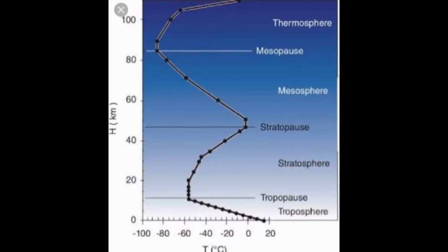The special feature of the pauses is that maximum changes occur between the layers of the atmosphere at these pauses, because particles from the lower and upper layers mix in these regions. However, there is no change in temperature with increase in height within the pauses.